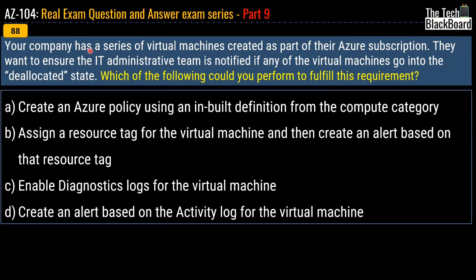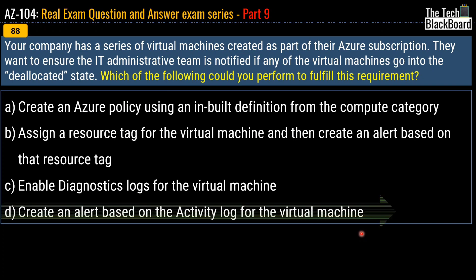Question number 88 says that your company has a series of virtual machines created as part of their Azure subscription. They want to ensure that the IT administrative team is notified if any virtual machine goes into the deallocated state. Your options are: create an Azure policy using an inbuilt definition from the compute category; assign a resource tag for the virtual machine and create an alert based on that; enable Diagnostics Log for the virtual machine; or create an alert based on the activity log for the virtual machine. The correct answer is option D — create an alert based on the activity log. Activity log records all control plane activities, including recording the event when a virtual machine goes into the deallocated state.